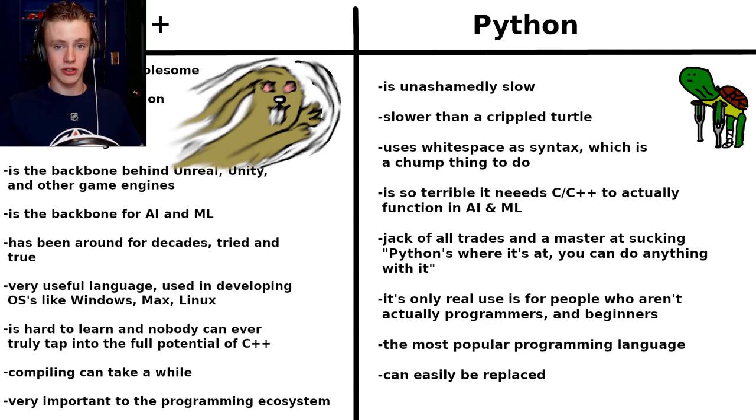The downfall of C++ is that it's hard to learn, and nobody can ever truly tap into its full potential — I don't even think Bjarne Stroustrup himself could fully optimize C++ to its capability. C++ takes a while to learn with a lot of nooks and crannies to figure out, whereas Python has a more limited toolset requiring less knowledge. Learning C++ takes approximately a year if you really push yourself, while a beginner could learn Python in about six months. The second downside to C++ is compilation — that can take a while since it's a compiled language that converts human code into machine code, and the optimizations take time. You might want to set the coffee on when you start compiling C++.